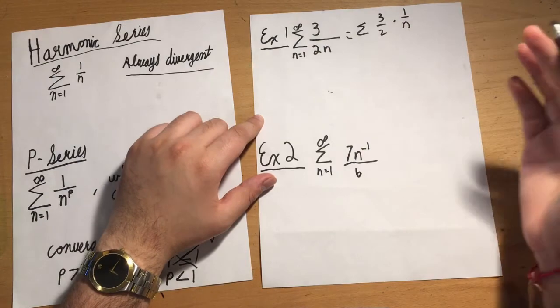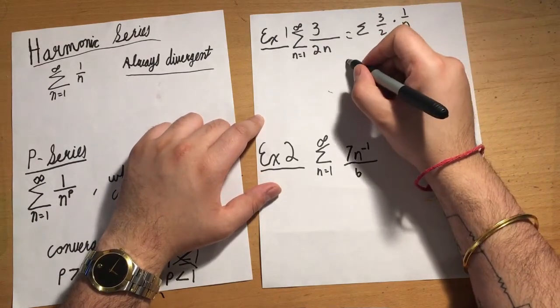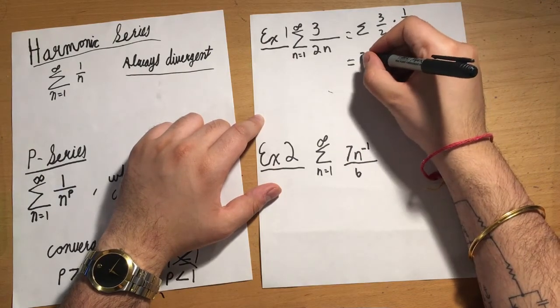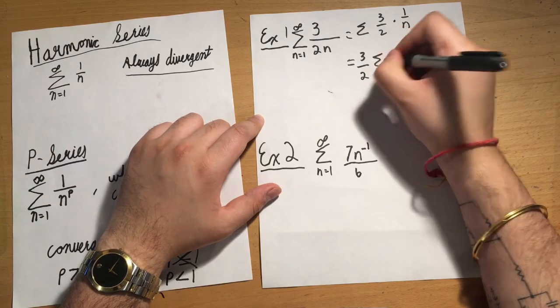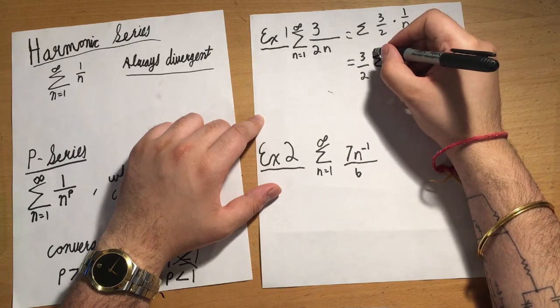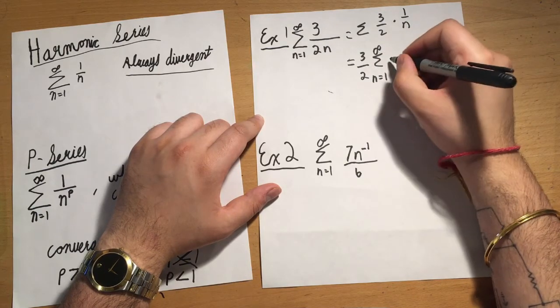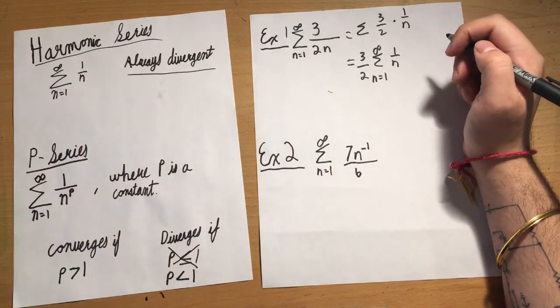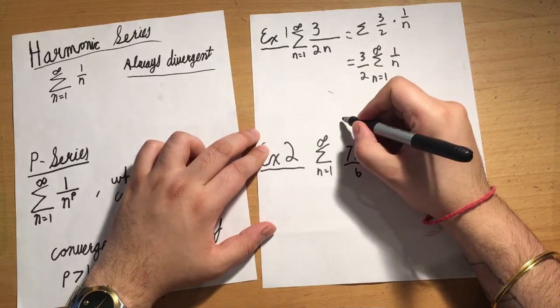The same way I'm able to take out something when integrating, I can take out constants when manipulating a series. So now I have 3/2 on the outside, multiplied by the infinite series from 1 to infinity of 1/n, which is the form of a harmonic series. That means this particular series is divergent.